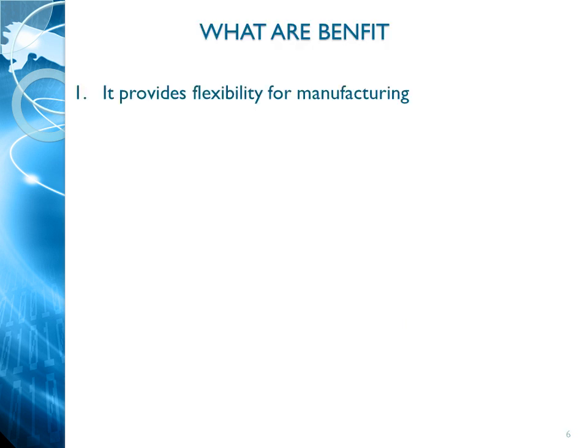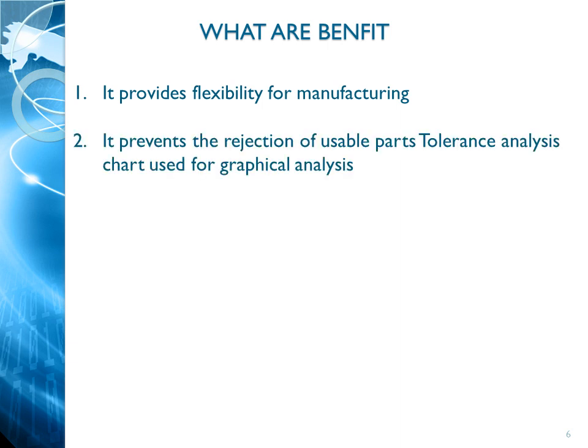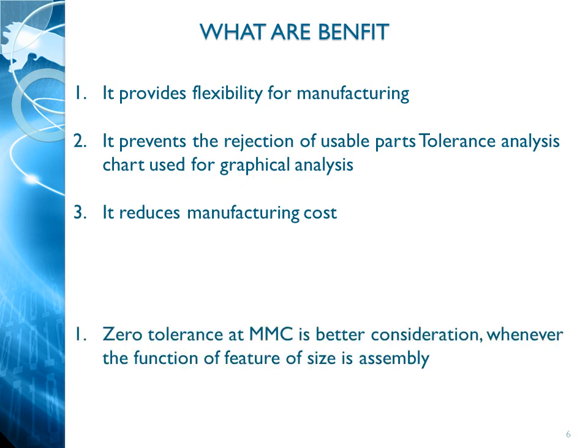Let us summarize the benefits. It provides greater flexibility for manufacturing. It prevents the rejection of usable parts that would have been rejected using a conventional position tolerance — those can now be accepted. This can be proved using tolerance analysis, a chart used for graphical analysis of tolerances. And it reduces manufacturing cost drastically.